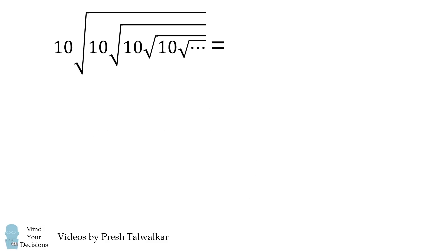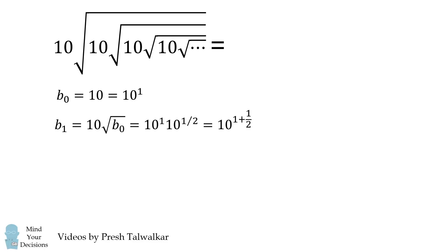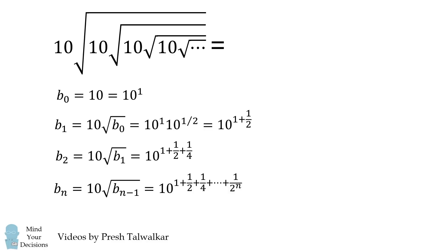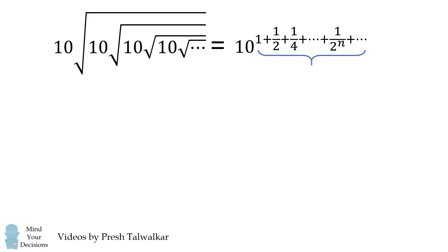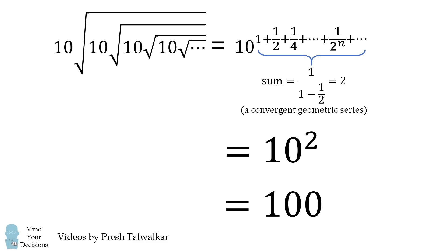So now let's get to the answers. We solve this by considering the partial products. The first partial product is 10, or 10 to the power of 1. The next term is 10 times the square root of the previous term, giving 10 to the power of 1 plus 1/2. The next gives 10 to the power of 1 plus 1/2 plus 1/4. This pattern gives us 10 raised to a geometric series: 1 + 1/2 + 1/4 + ... The exponent is a convergent geometric series summing to 2, so the answer is 10 squared, or 100.